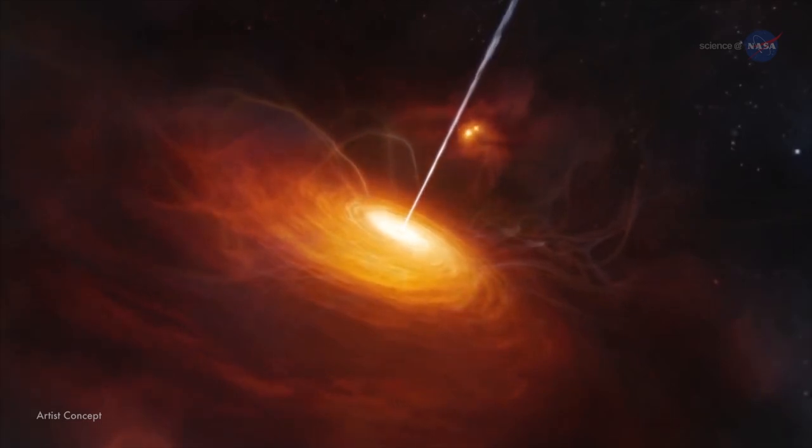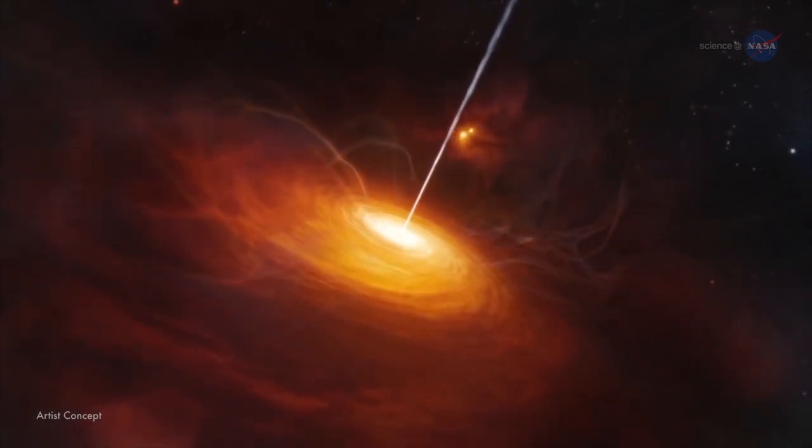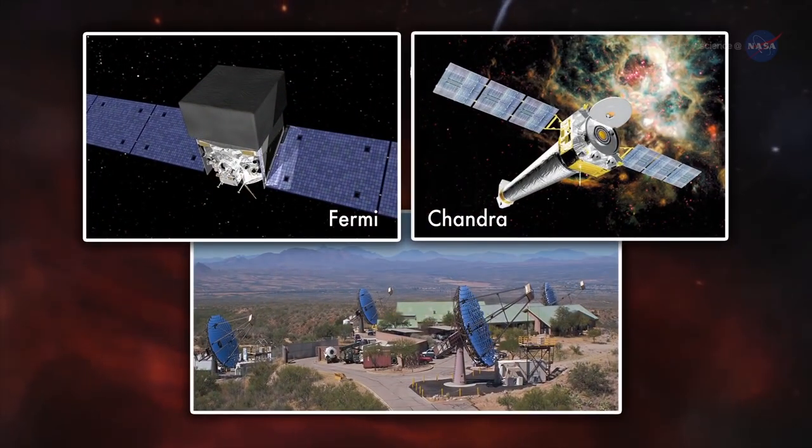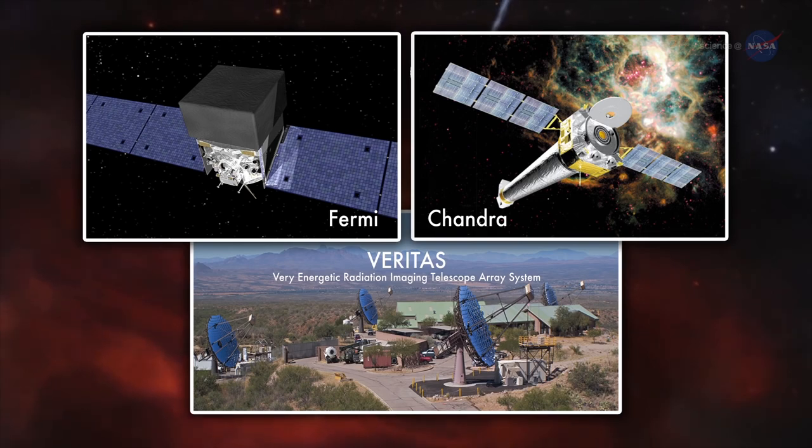Perlman and his colleagues recently attempted to do so by using X-ray and gamma-ray observations of distant quasars by the Chandra X-ray Observatory, Fermi Gamma-ray Space Telescope, and the Very Energetic Radiation Imaging Telescope Array System, or VERITAS.